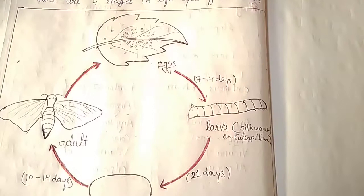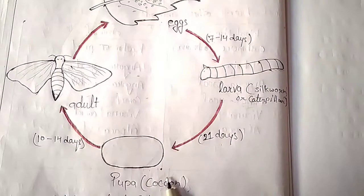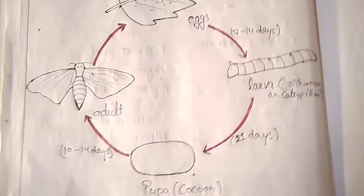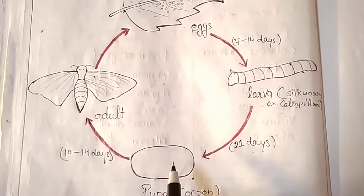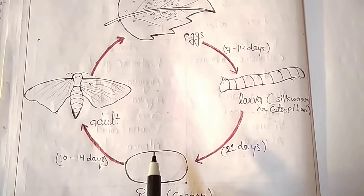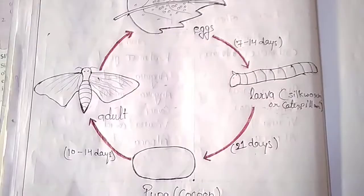The color of the cocoon varies depending on what the silkworm eats — it can range from white to golden yellow. This stage is the pupa, also known as the cocoon. The pupa undergoes many changes inside the cocoon and takes around 10 to 14 days to form an adult moth, which then breaks the cocoon and comes out.